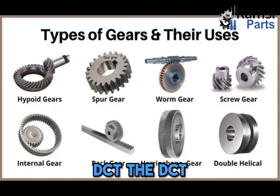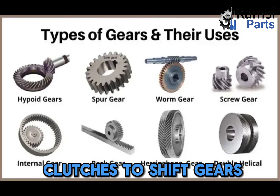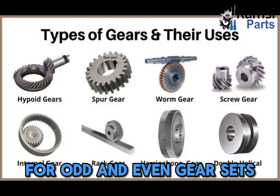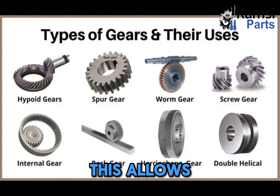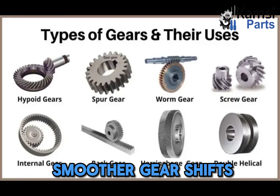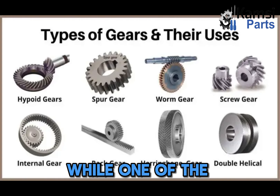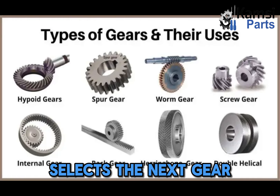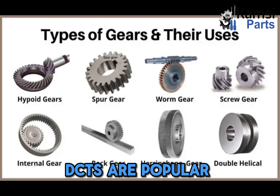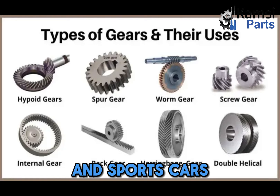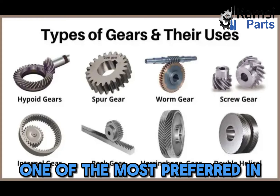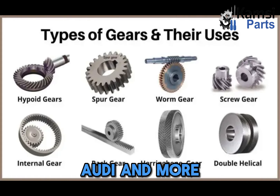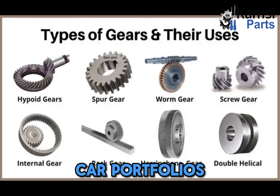4. Dual clutch transmission (DCT): the DCT employs two clutches to shift gears, offering optimum performance. It uses two separate clutches for odd and even gear sets, reducing gear shift lag. This allows for quicker and smoother gear shifts compared to traditional gearboxes. While one of the clutches is engaged offering the required power, the other pre-selects the next gear, allowing for faster transitions. DCTs are popular among high-performance and sports cars; however, it is fast becoming one of the most preferred in the mass-market car segment. Brands such as Volkswagen, Skoda, Audi and more are offering DCT in their Indian car portfolios.